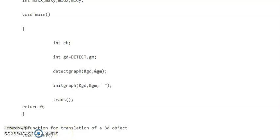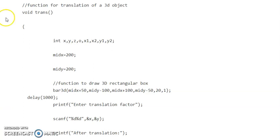What is your trans function? It is explained below. See your trans function definition, that is void trans. Inside this trans function we are declaring these variables, integer type variables: x, y, z, o, x1, x2, y1, y2.